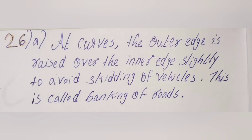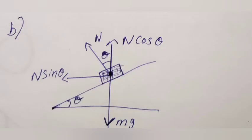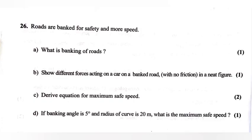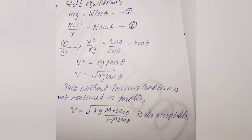Part b: Show different forces acting on a car on a banked road in a neat figure. Part c: Derive the equation for maximum safe speed. At equilibrium: mg = N·cosθ — equation 1; mv²/r = N·sinθ — equation 2. Dividing equation 2 by equation 1: v² = rg·tanθ.